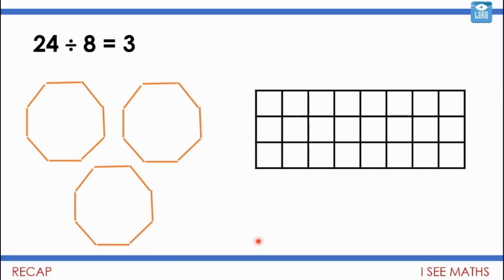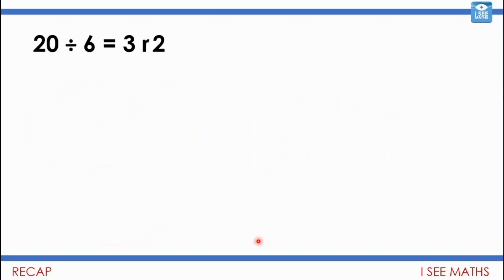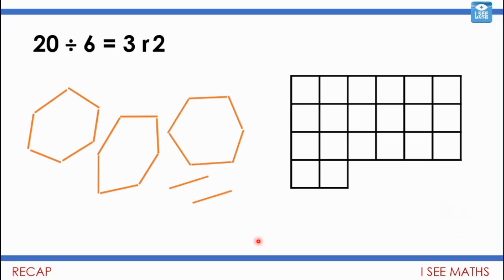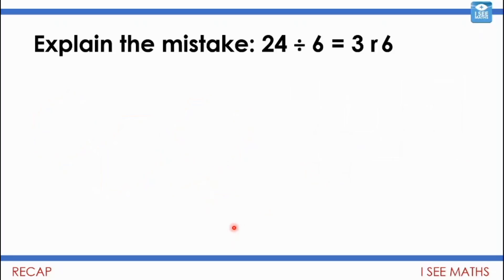Now it's your turn: 20 divided by 6 equals 3 remainder 2. You might just tell the screen and imagine it, or maybe you'll pause the video and do a drawing. What does that look like? With matchsticks it could be: how many 6s in 20? One, two, three — that's 18 in total, 2 more is 20. Or with an area model, I've got three 6s and then two more is 20 in total.